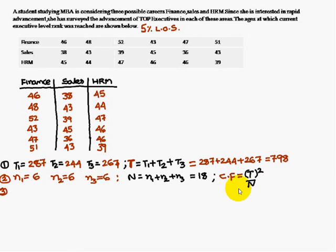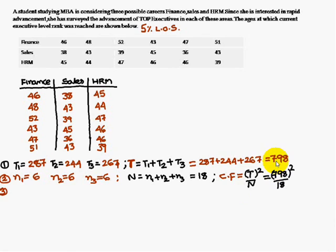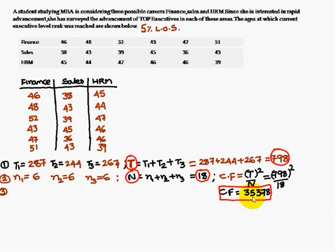Next, we find the correction factor (C.F.), which equals capital T squared divided by capital N. So C.F. = 798² / 18 = 35,378. Remember this value.